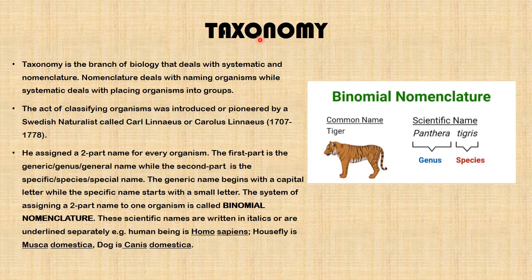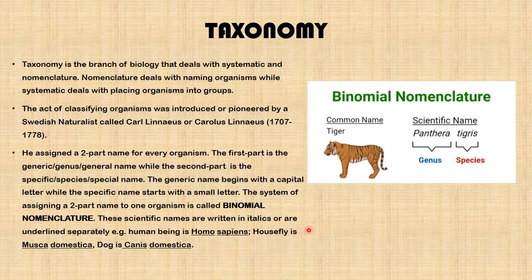Taxonomy is the branch of biology that deals with systematics and nomenclature. Nomenclature deals with naming organisms, while systematics deals with placing organisms into groups. The art of classifying organisms was pioneered by Swedish naturalist Carl Linnaeus, who lived between 1707 and 1778. He assigned a two-part name for every organism: the first part is the generic or genus name, and the second part is the specific or species name. The system of assigning a two-part name to an organism is called binomial nomenclature.